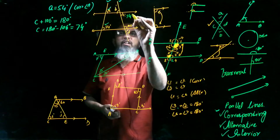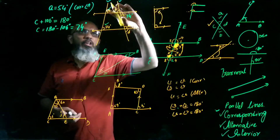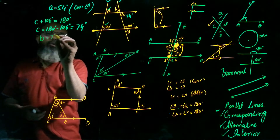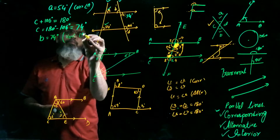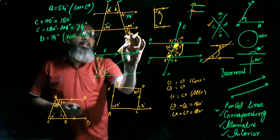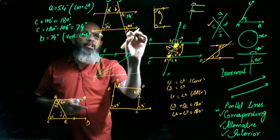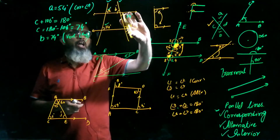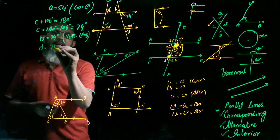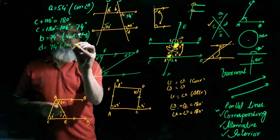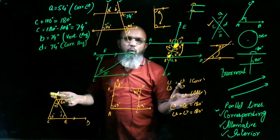Now, what is angle B? The two lines are intersecting, so these are vertical angles. Therefore angle B is also 74 degrees. Write: vertical angles. For angle D, it is also a corresponding angle to angle C, so angle D also equals 74 degrees. Write: corresponding angles. You can write the short form or full name for corresponding, alternate, and vertical angles.